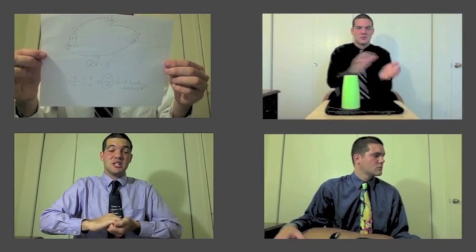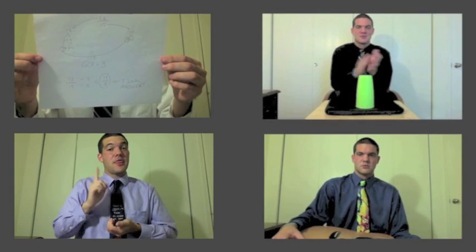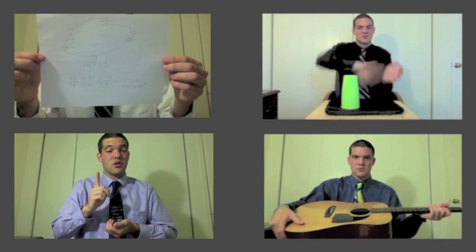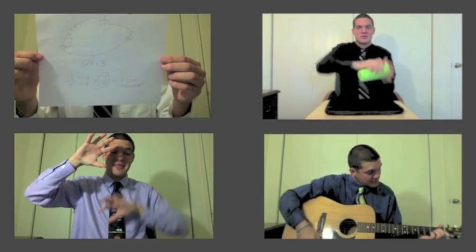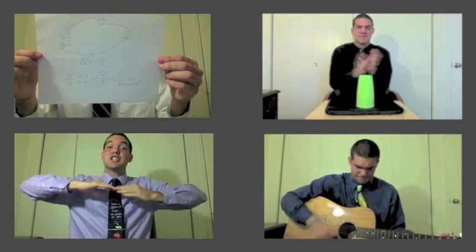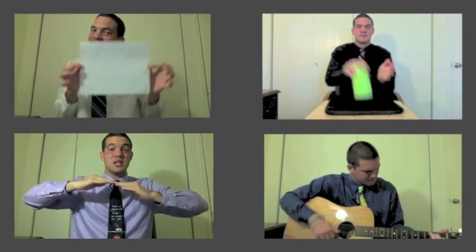When you reduce, you need the GCF — the greatest common factor. With that, you must divide both the top and the bottom. Now you're a fraction master! Fractions, fractions, fractions are what we need to know.